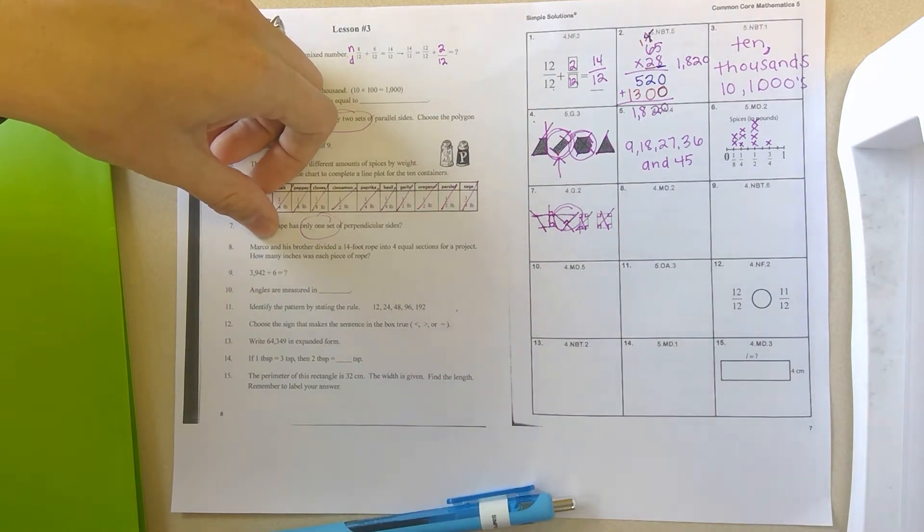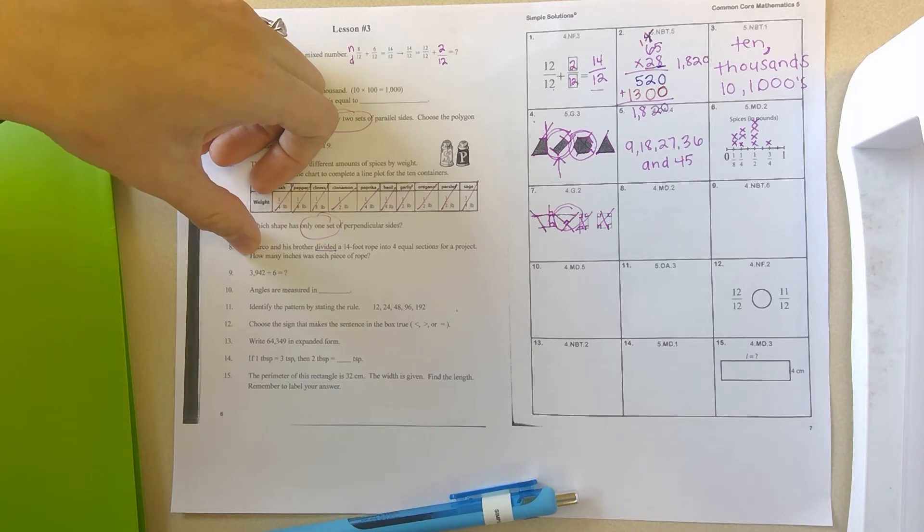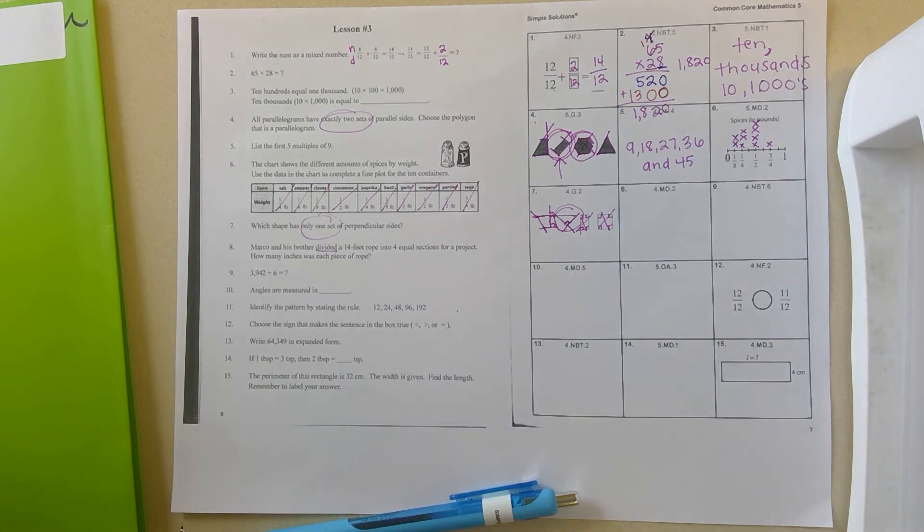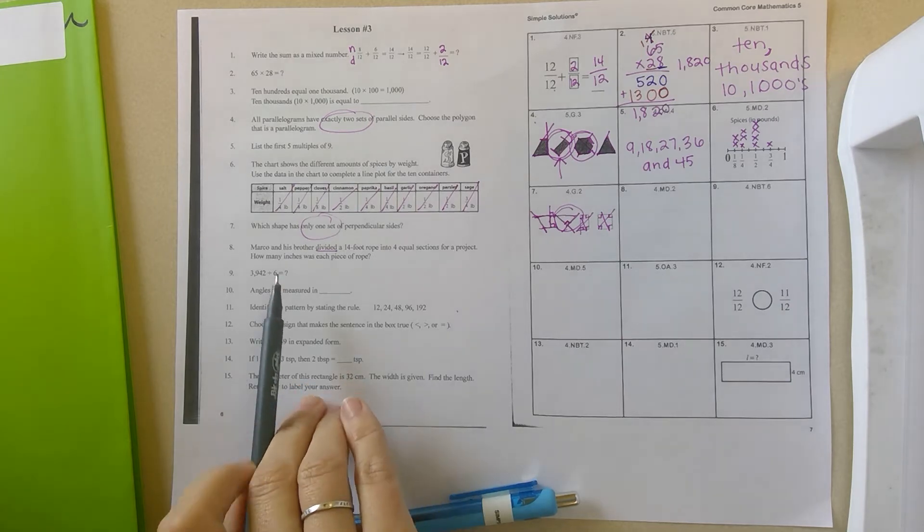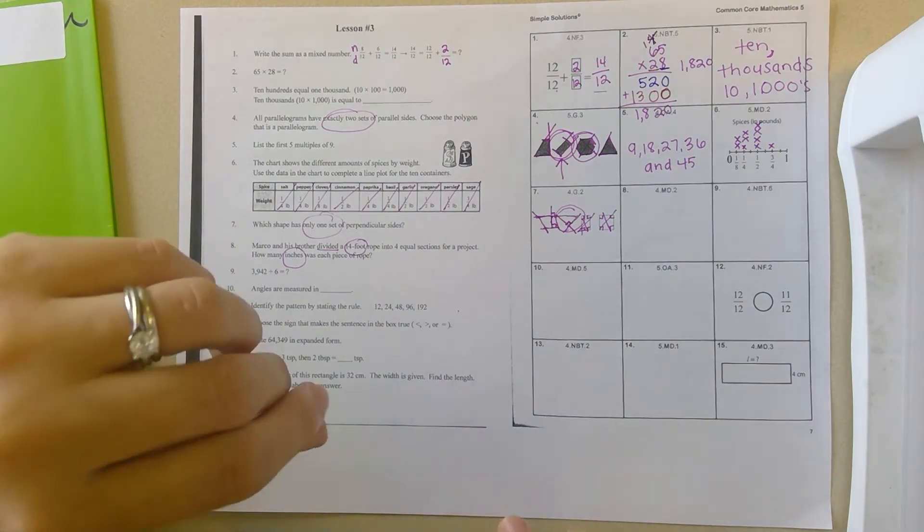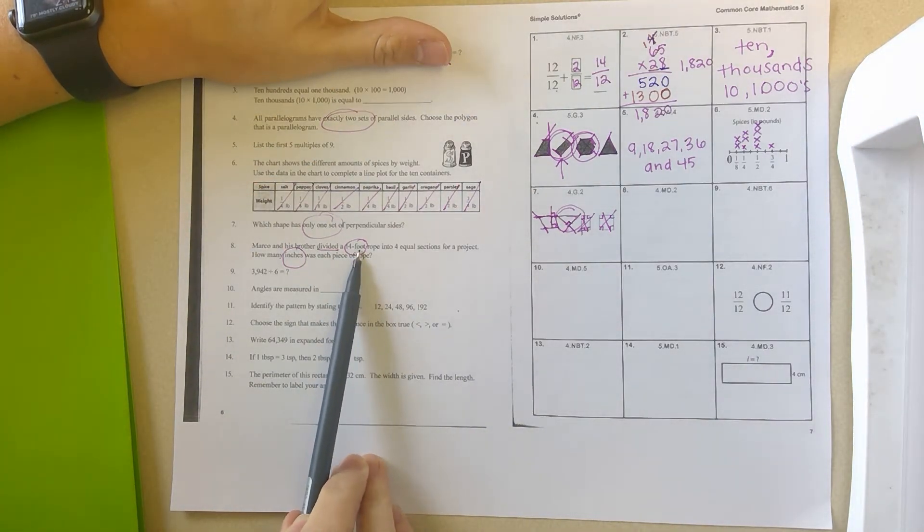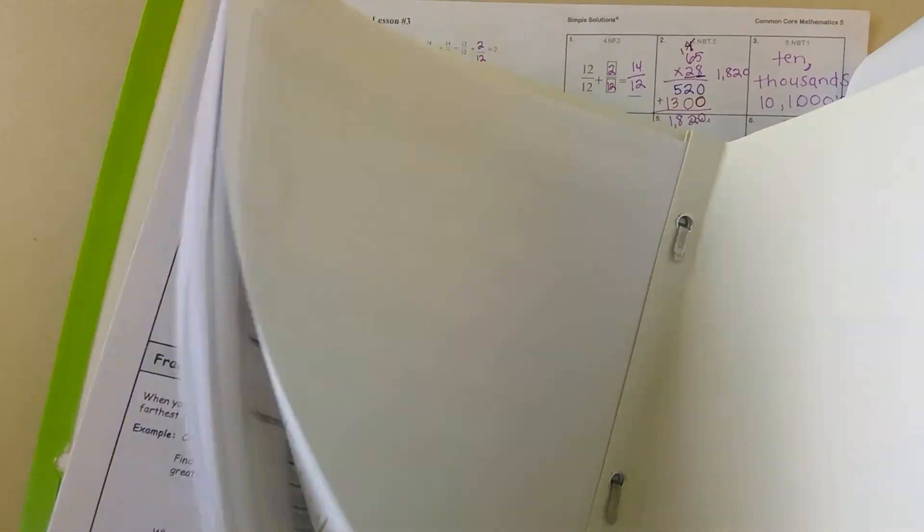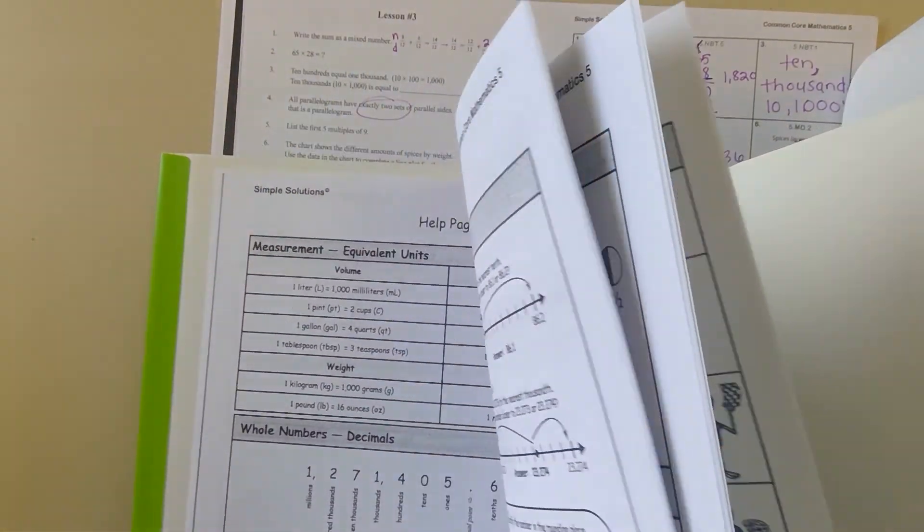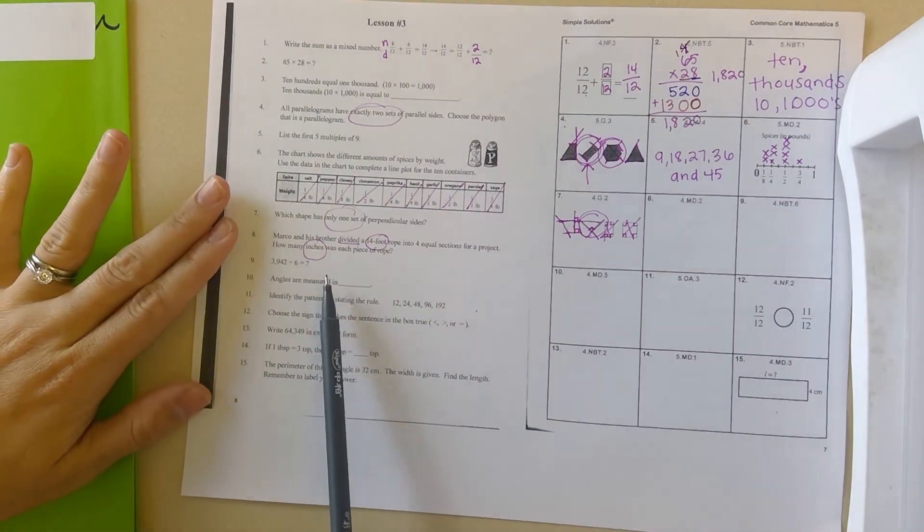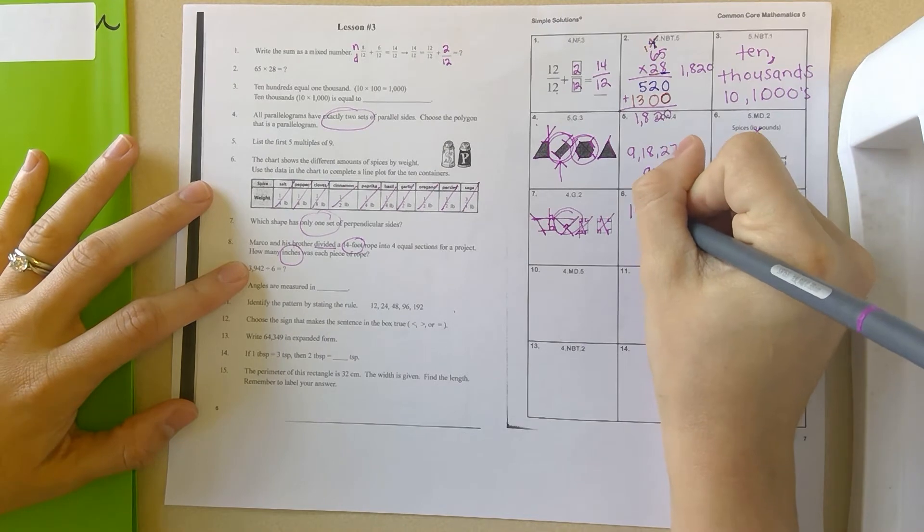Number eight, Marco and his brother divided a, that's a key word there, divided a 14 foot rope into four equal sections for a project. How many inches was each piece of rope? So we're doing 14 divided by four. So if they divided that, how many inches? Key words here. So it's a 14 foot rope, but I want to know how many inches was each piece. So what we really need to do is see, we know that it's a total of 14 feet, but we need to see a total of inches. So how many inches are in a foot? If you don't know, that is something that is in your help pages. There's a section that has some measurements on it. Right here. So one foot is 12 inches.